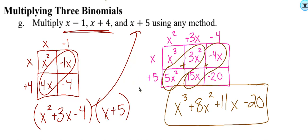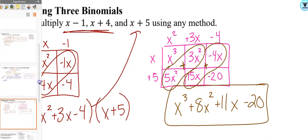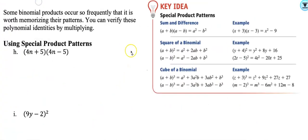Now there are some special cases when multiplying polynomials where something fancy happens. You have to memorize all of this — otherwise there's no point in learning the special pattern. If you're not going to memorize it, just do it normally with the box method. But I will show you some cool things. Some binomials occur frequently, so they're worth memorizing. Here are the following identities.